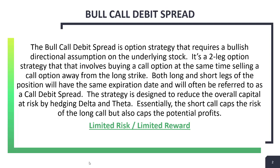The strategy has limited risk and limited reward — it's naturally hedged. A calendar spread can be a debit spread, but when it's in two separate months they differentiate it by calling it a calendar spread rather than a straight debit spread.